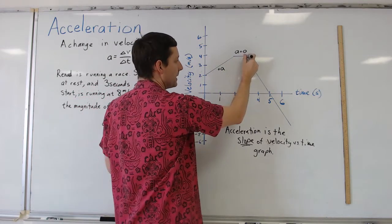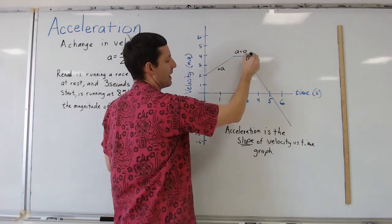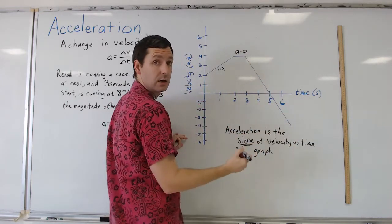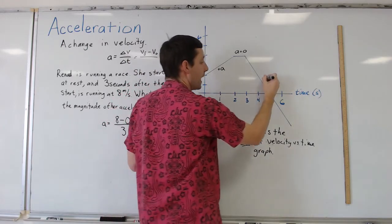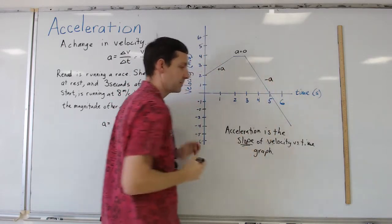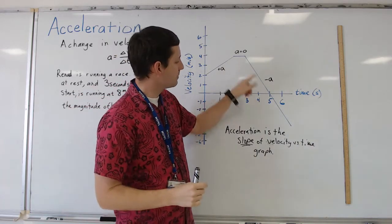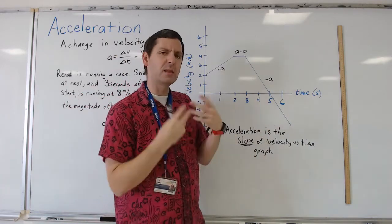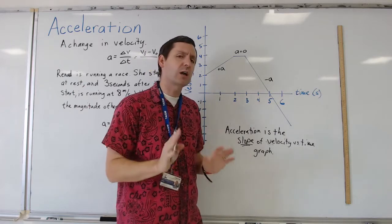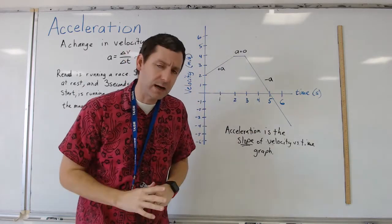From here until the end, you can tell we have a negative slope — the graph is going down. That would be a negative acceleration. I could go through, label some points, get the value and the magnitude — I trust that you can find the slope — so I'm not going to go through that right now. What I'd like to talk about is conceptually what's happening here, because this is important.